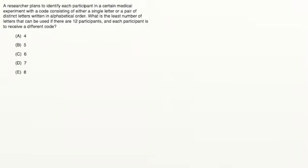A researcher plans to identify each participant in a certain medical experiment with a code consisting either of a single letter or a pair of distinct letters written in alphabetical order. What is the least number of letters that can be used if there are 12 participants, and each participant is to receive a different code?